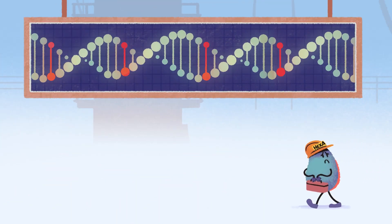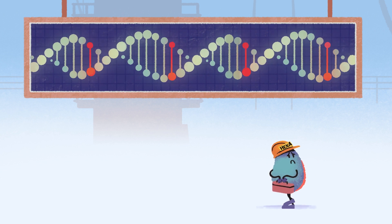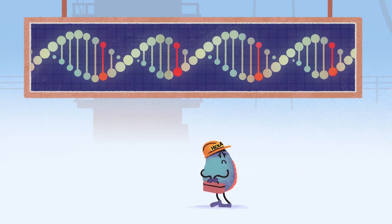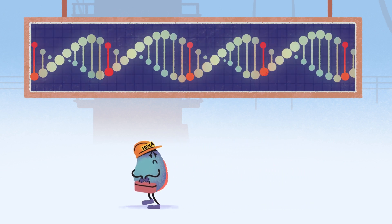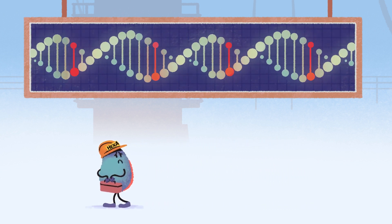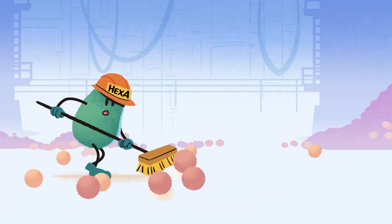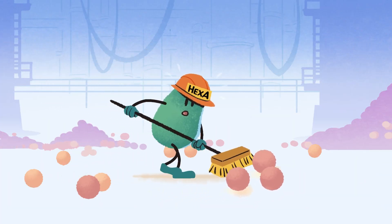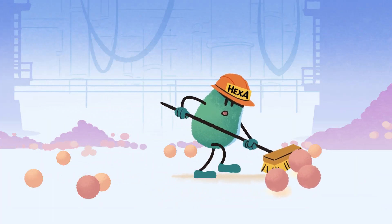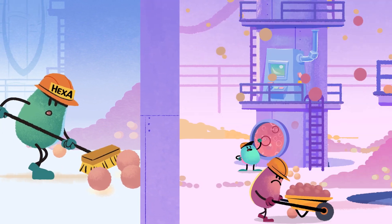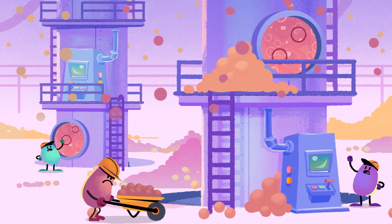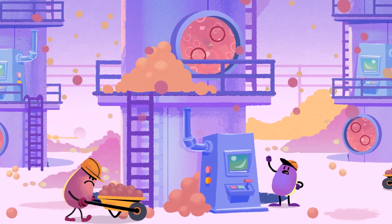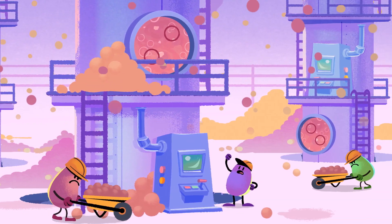However, in people with Tay-Sachs or Sandhoff disease, the mutated genes mean there aren't enough Hex-A workers. This means GM2 can't be removed properly and it starts to build up until the factory — the brain — is unable to work as well as it should.